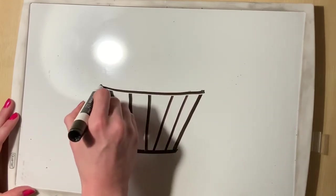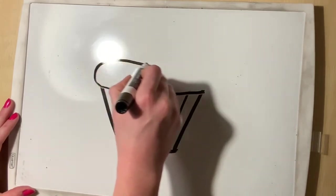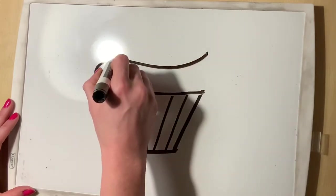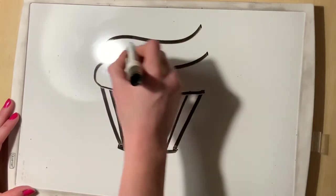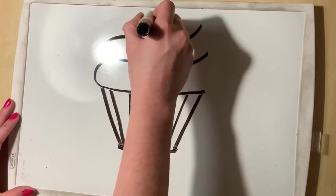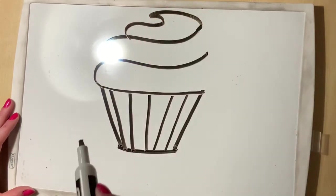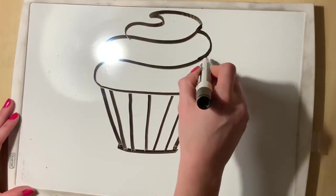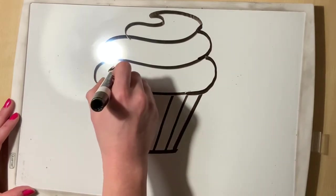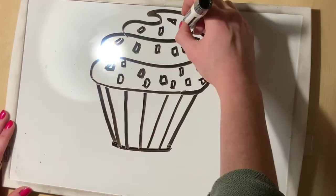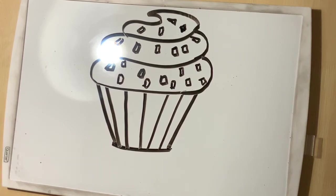Here's another way to do frosting. Draw three long bumps on one side of your cupcake. Then on top, put a little shark fin and complete the frosting by adding curved lines on the other side.